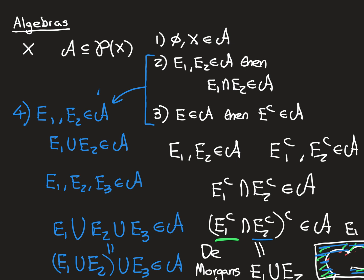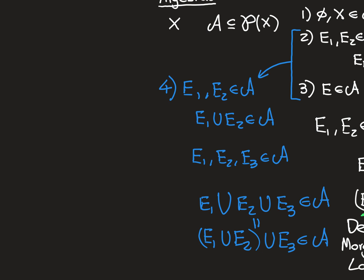So algebras have: the empty set and whole set in the algebra; closure under intersection; closure under complement; and also closure under union. Properties two and three together imply closure under union. Indeed, you could actually change property two and some textbooks may do this: replace closure under intersection with closure under union — requiring e1 union e2 to be in the algebra — as property two. They're interchangeable in the definition of an algebra because of De Morgan's law and closure under complement. Note they're not interchangeable in the definition of a semi-algebra — there you must keep it as intersection. But in an algebra, there's a little freedom in the definition.